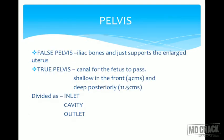The pelvis is divided into false pelvis and true pelvis. False pelvis is formed by iliac bones and supports the gravid uterus. True pelvis is the canal through which the fetus passes; it is shallow in front — only 4 cm at the pubic symphysis — and deep posteriorly at 11.5 cm. The true pelvis is divided into inlet, cavity, and outlet.